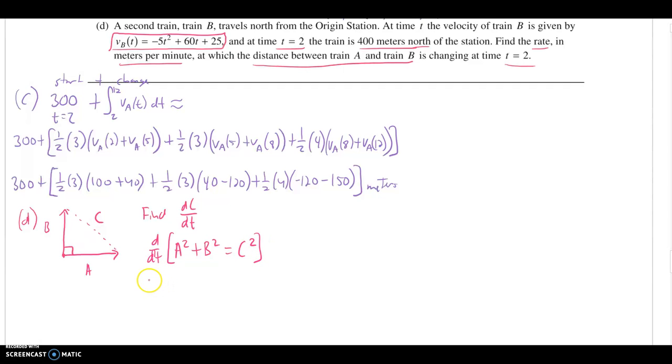The derivative of A squared with respect to time would be 2A. It is not a variable T, so your implicit differentiation says we got to include this DA, DT notation to show we did differentiate a variable A. Plus 2B, DB, DT equals 2C, DC, DT. If you want to, before you move on, you can divide out the two. It's completely optional. The bigger things are, we're looking for DC, DT. We need values for every other variable in the problem.